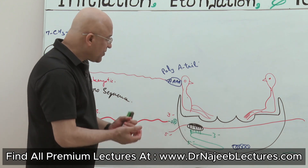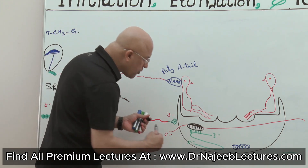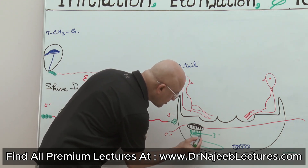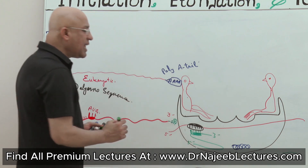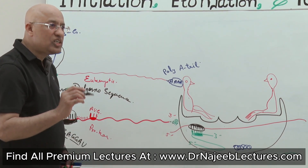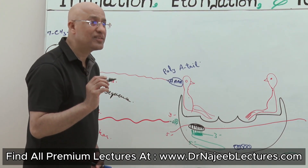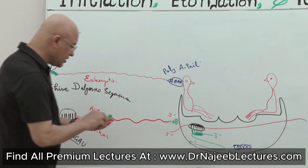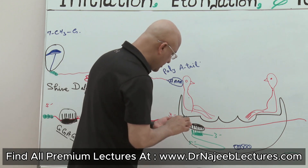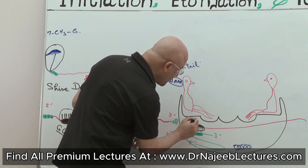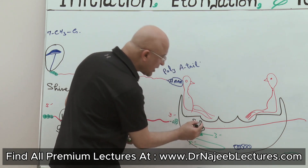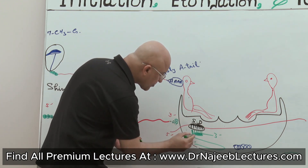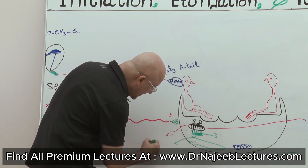That is why this point in the 16S subunit is also called the anti-Shine-Dalgarno sequence. If the mRNA sequence is SD (Shine-Dalgarno), then this complementary sequence on the rRNA should be anti-SD.